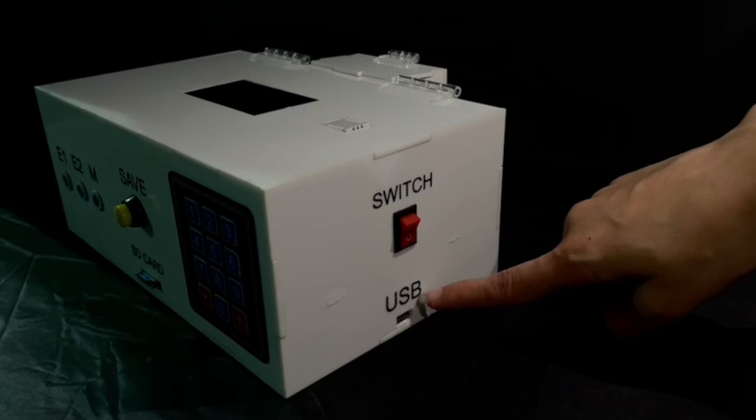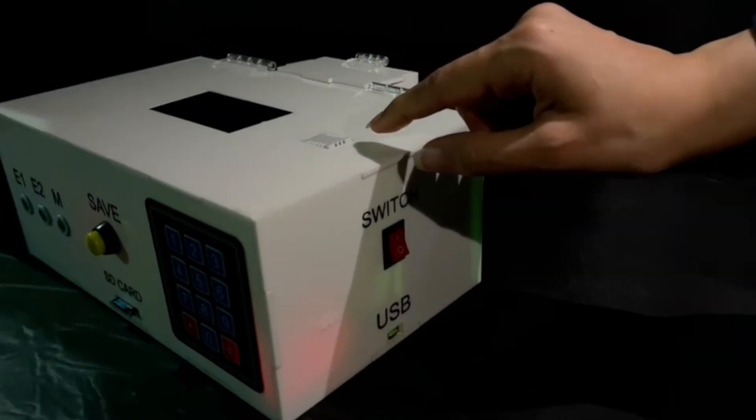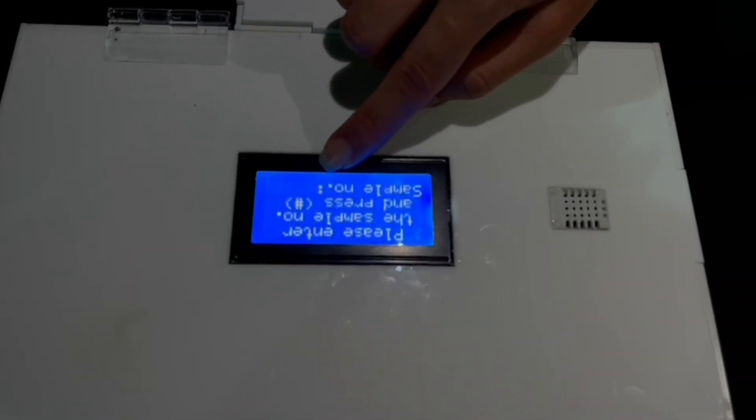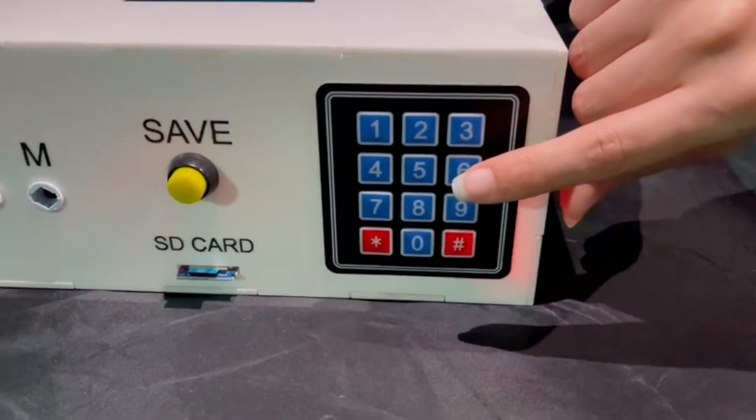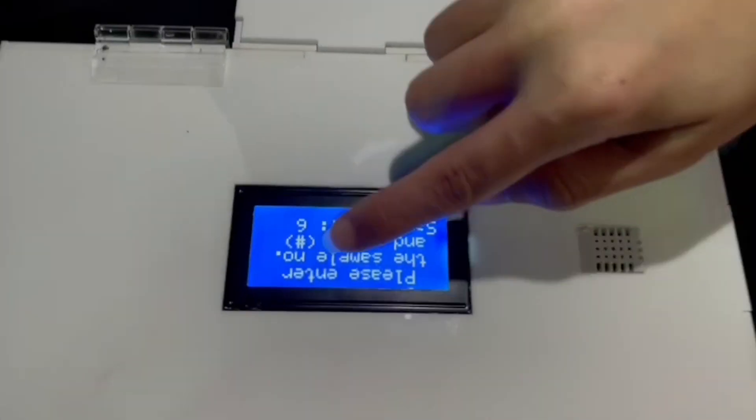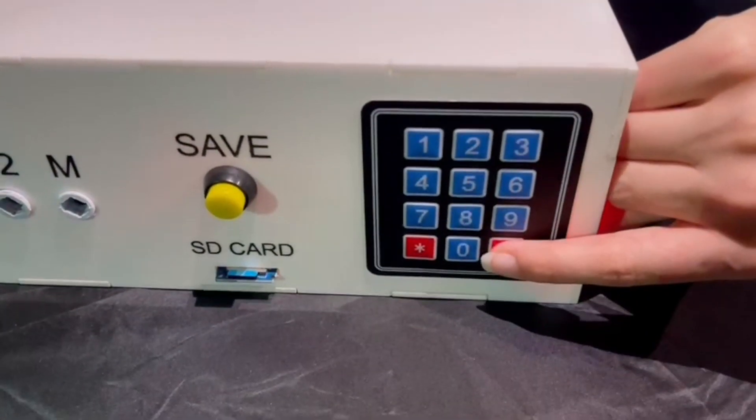Firstly, turn the switch on. Under the switch, a USB port exists to recharge the device. Then the LCD screen is going to show the instructions, which is pressing the sample number from the keypad, then pressing the hash or pound sign.